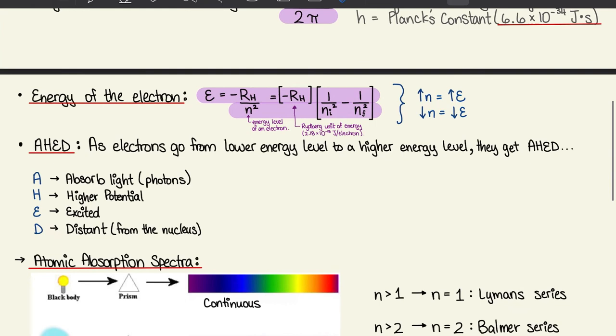We have another equation derived from the Bohr model, which is the energy of the electron: E equals negative R_H over N squared, where R_H is the Rydberg unit of energy (2.18 times 10 to the negative 18 joules per electron) and N squared is the energy level of an electron. If we extend this equation, it becomes N_initial squared minus N_final squared. The main takeaway is that as electrons go from lower to higher energy level, the energy itself increases or decreases depending on the direction.